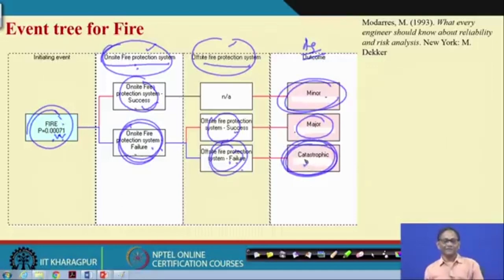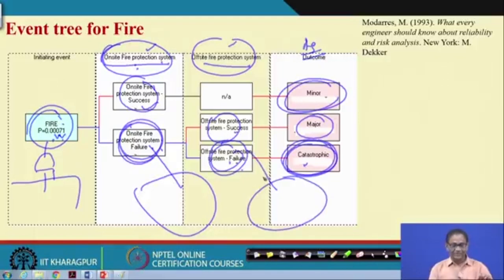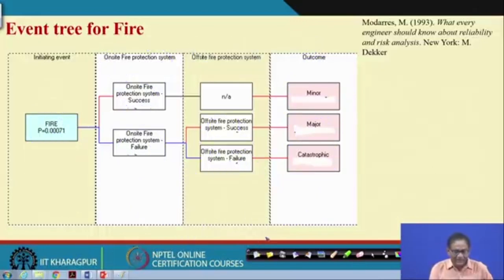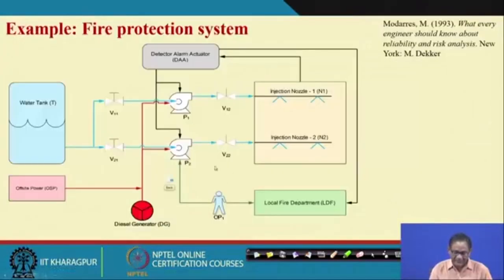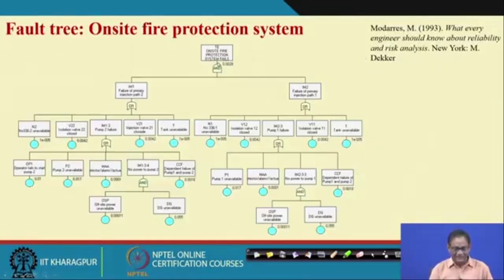In the bow tie, you have one fault tree on the left side and one event tree on the right side, with potentially another fault tree for the offsite protection system. The onsite protection system failure fault tree shows: failure of primary injection path 1 and failure of secondary injection path 2. Path 1 failure involves nozzle failure, valve failure, inlet/outlet valve failure, tank unavailability, and pump failure. Both pumps are identical, so there will be common cause failures — certain causes may fail pump 1 and pump 2 simultaneously, and those must be accounted for.